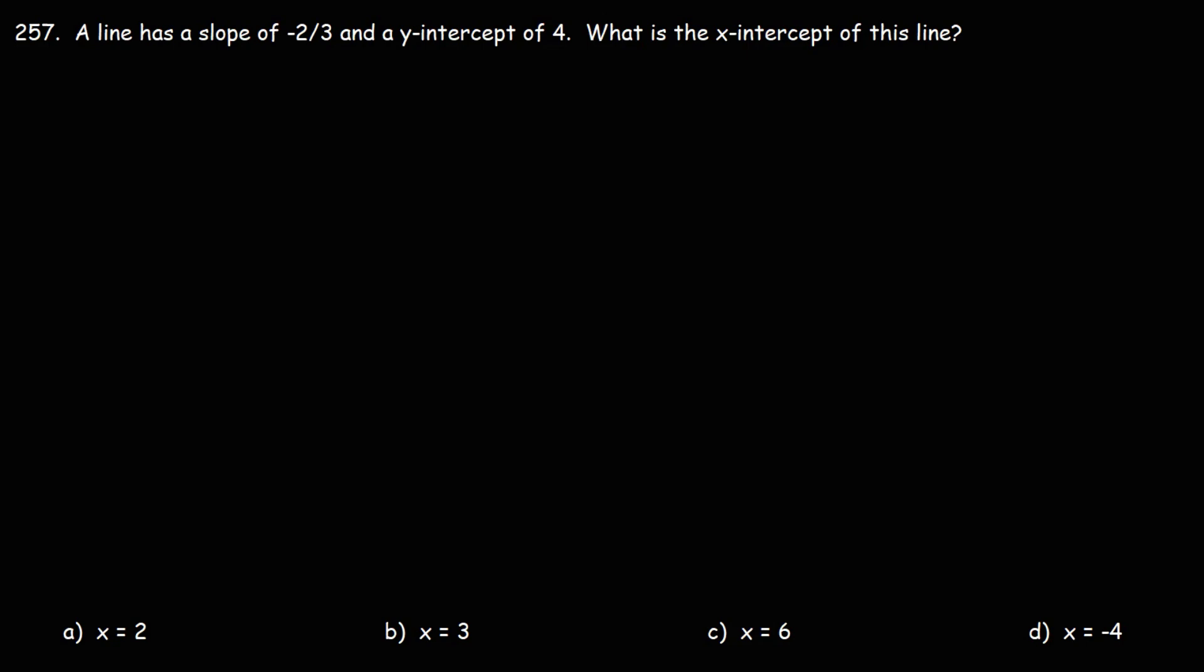257. A line has a slope of negative 2 over 3 and a y-intercept of 4. What is the x-intercept of this line?